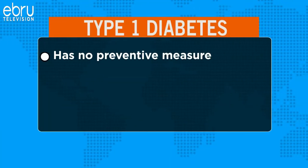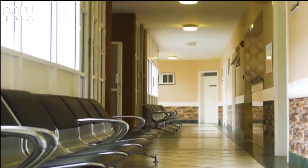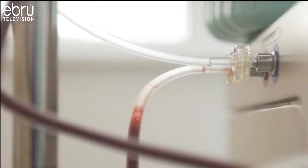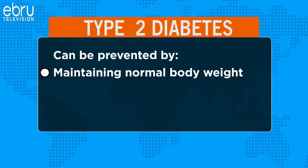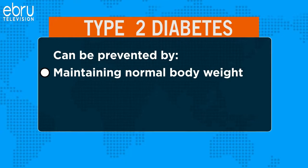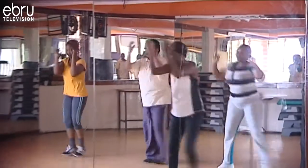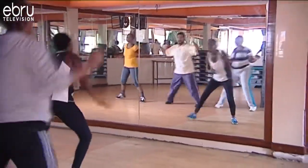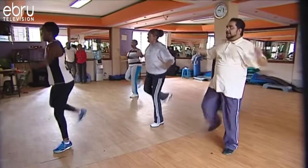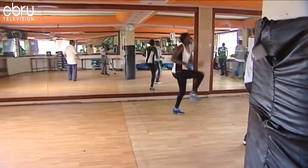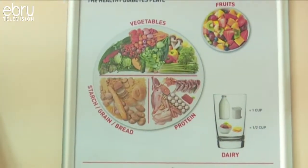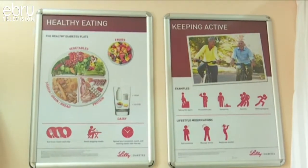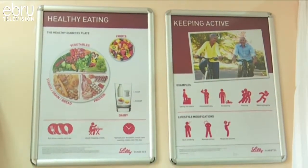There is no preventive measure for type 1 diabetes; however, type 2 diabetes, which accounts for 85 to 90 percent of all cases, can often be prevented or delayed by maintaining a normal body weight, engaging in physical activity, and consuming a healthy diet. Higher levels of physical activity reduce the risk of diabetes by 28 percent. Dietary changes include eating whole grains and fiber, choosing good fats found in nuts, vegetable oils, and fish, eating less red meat and saturated fats, and limiting sugary beverages.